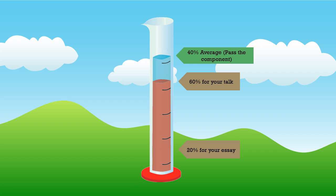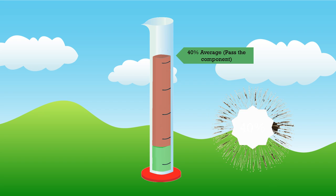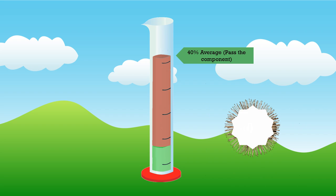Now, 20% for your essay is below 40%, so you might think that you failed the essay. But remember, it's an average of parts within a component. And so if we average the two, you get 40% for the component, and that means that you've passed it.